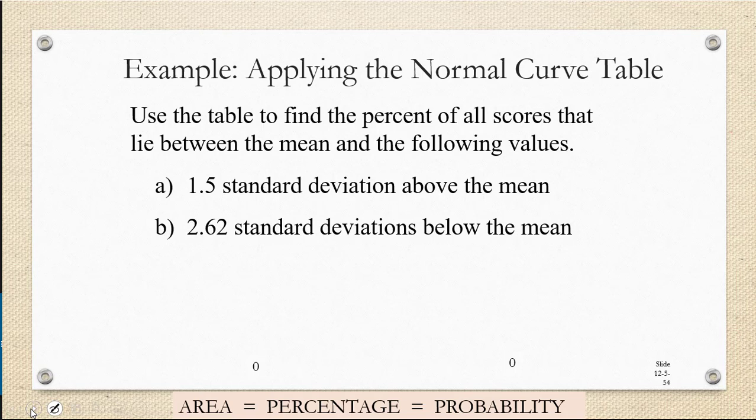Let's look at this example. We're going to use the table to find the percent of all scores that lie between the mean and the following values: Part A, 1.5 standard deviations above the mean, and Part B, 2.62 standard deviations below the mean. Now it's going to be very important that you always draw the picture of your standard normal curve, because the problems will get more complicated, and you will need to refer to the diagram to know what operations to do.